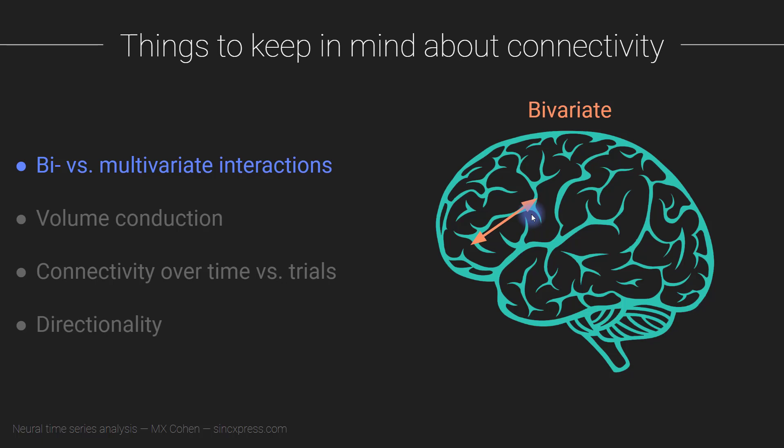I will talk a little bit about graph theory towards the end of the section, but multivariate measures tend to be vague and sometimes difficult to interpret — very high-level, where the conclusion ends up just being that there is more or less connectivity in some condition or group of individuals. So again: multivariate is how things really are in the brain; bivariate is how we tend to analyze our data. That's not wrong per se, but it is important to keep in mind that this is relatively impoverished.